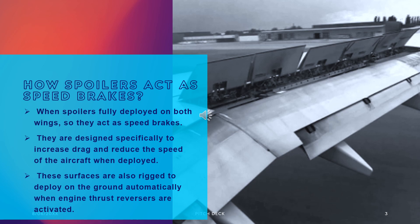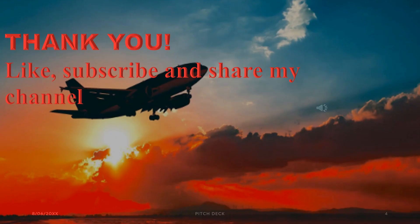At low speed, the speed brake control in the cockpit can deploy all spoiler and speed brake surfaces fully when operated. Often these surfaces are also rigged to deploy on the ground automatically when engine thrust reversers are activated.